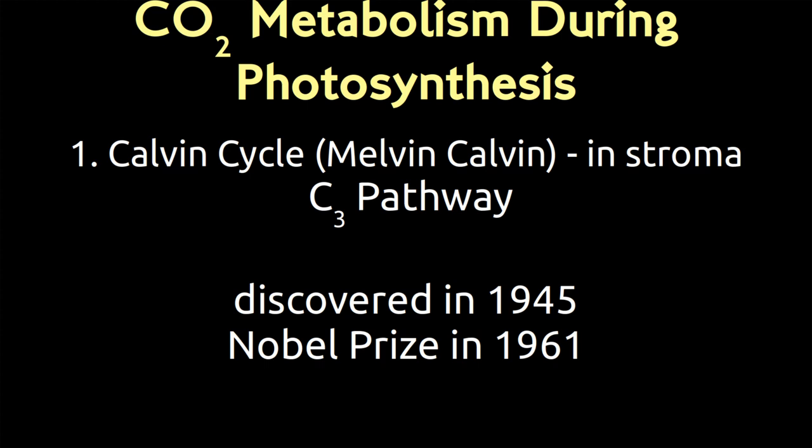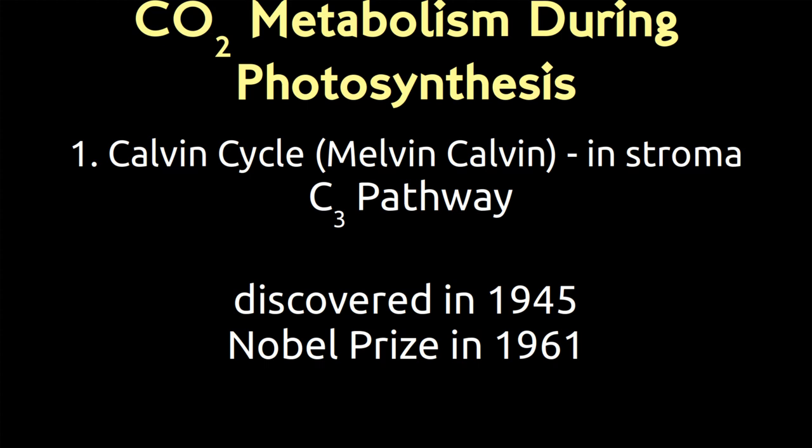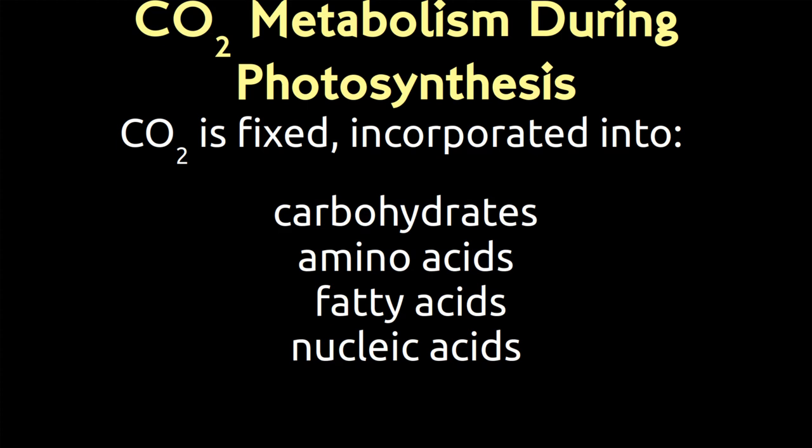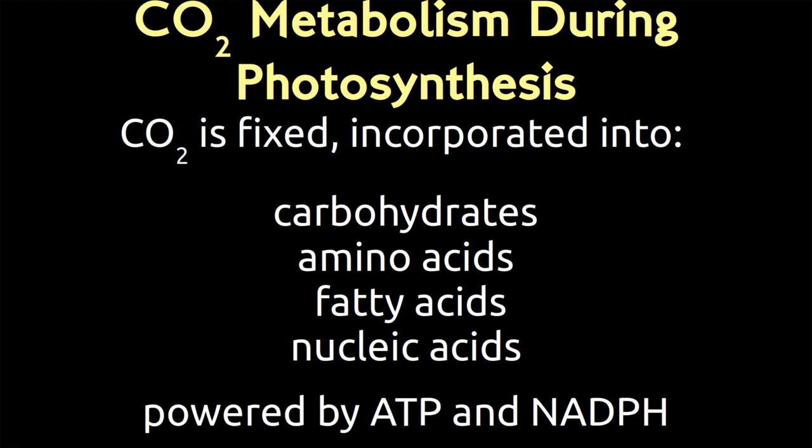What happens in the Calvin cycle is the major part: carbon dioxide is fixed and incorporated into a handful of different molecules that the plant needs to grow. So carbohydrates, amino acids, fatty acids, nucleic acids — although not all directly. And we're going to power this process with ATP produced during photophosphorylation and the NADPH.